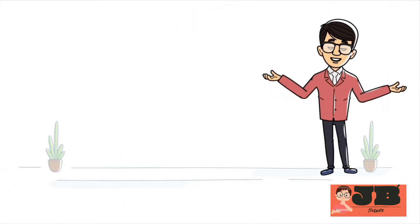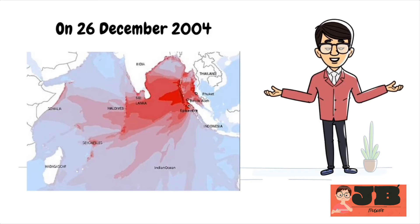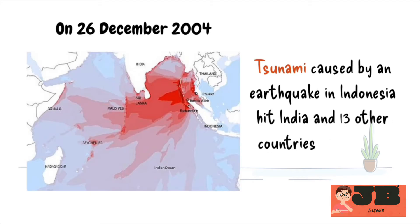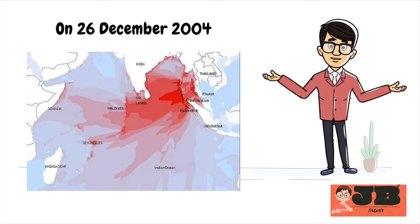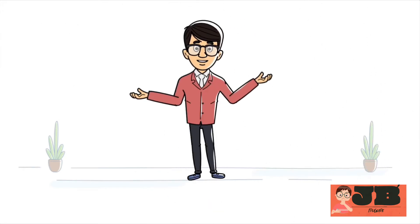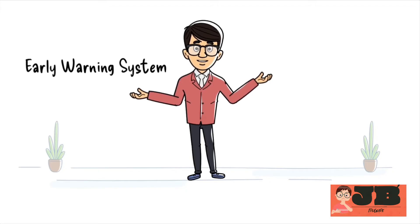For example, on December 26, 2004, a huge tsunami caused by an earthquake in Indonesia hit India and 13 other countries around the Indian Ocean. Over 200,000 people lost their lives. In India, the Andaman and Nicobar Islands, as well as the coasts of Tamil Nadu and Kerala, were badly affected. Tsunamis like this are rare but very destructive. Fortunately, they can often be detected before they reach the coast, and many countries, including India, work together in an early warning system to help protect lives and property.